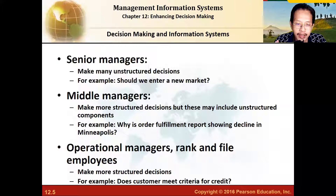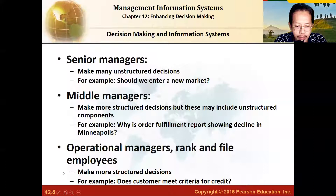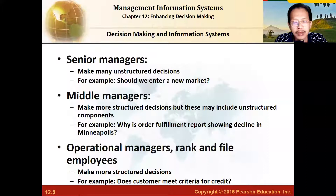There are three levels of decision makers, and each level makes different types of decisions. Starting from the operational managers — these are the supervisors at the lowest level who directly connect with employees. The decisions they make are more structured. For instance, is a customer viable to be given credit? There would be a standard operating procedure: check the monthly income, the age, the amount of credit proposed, and so on.